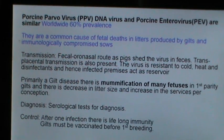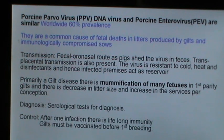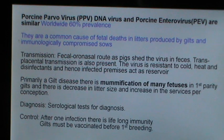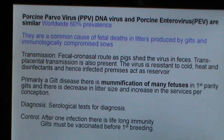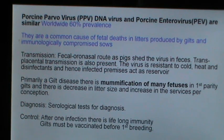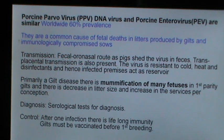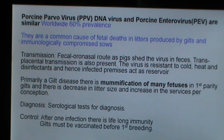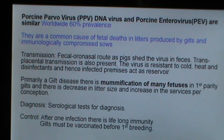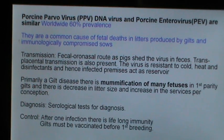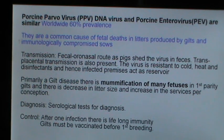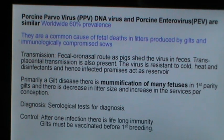Porcine parvovirus is caused by a DNA virus; porcine enterovirus is similar. They have a worldwide prevalence of 60% and are a common cause of fetal deaths in litters produced by gilts and immunologically compromised sows. Transmission is through the fecal-oronasal route as pigs shed the virus in feces; transplacental transmission is also present. The virus is resistant to cold, heat, and disinfectants, so infected premises act as a reservoir. It is primarily a gilt disease causing mummification of many fetuses in first-parity gilts. Diagnosis is by serological tests; after one infection there is lifelong immunity, but gilts must be vaccinated before their first breeding.